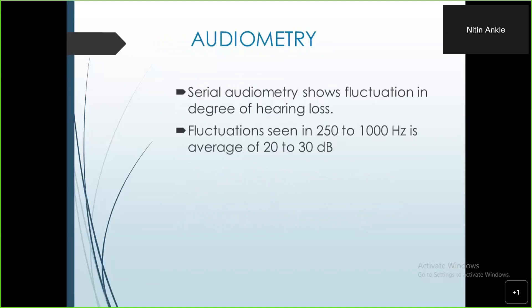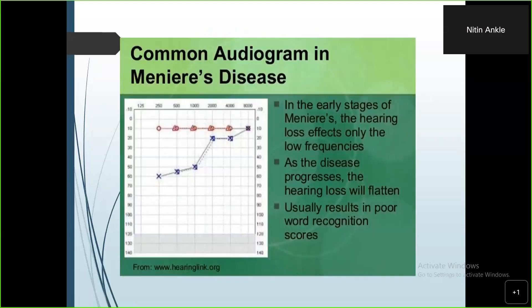The diagnosis can be clinched by serial audiometry showing fluctuation in degree of hearing loss. Fluctuations are usually seen at 250 Hz to 1 kHz, in the average of 20 to 30 decibels. Any two consecutive frequencies between 500 to 1500 Hz are important as speech thresholds lie here — if hearing loss is more than 20 to 30 dB, suspicion should grow. This graph shows early Meniere's disease with a rising type curve; the left ear is affected while the right is normal. The disease is usually bilateral but often presents unilaterally initially, with the other side involved years or even a decade later.